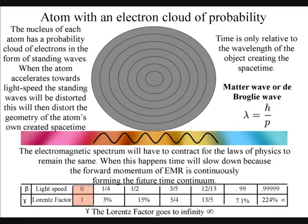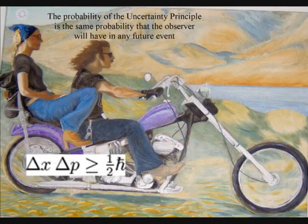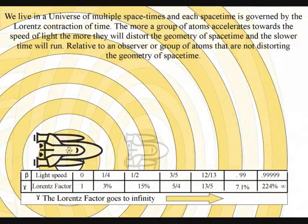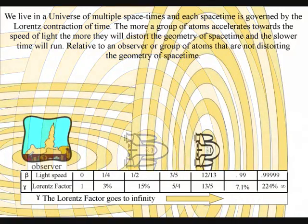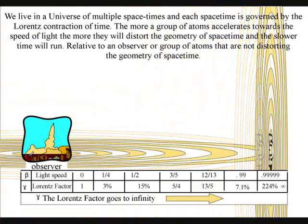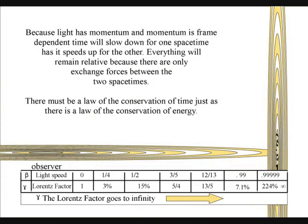We can see time is a variable because we have time dilation when objects accelerate towards the speed of light. We also have gravitational time dilation around objects of great mass.